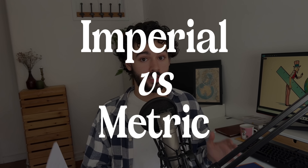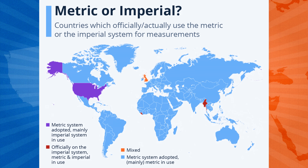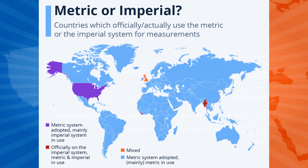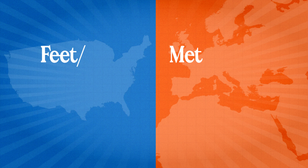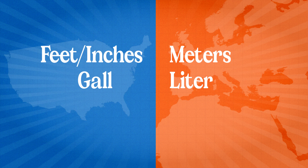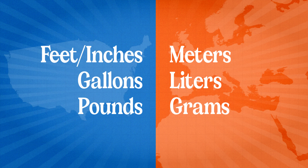This brings us to another difference that is arguably behind the other two — imperial versus metric. Almost every single country in the world uses the metric system, with units such as meter, liter, and gram to measure distance, weight, liquid volume, and mass. The exceptions are the United States, Burma, Liberia, and the UK, which sort of uses a mixed model. These countries use the imperial system, which instead of meters, liters, and grams, uses units like feet, inches, gallons, and pounds.